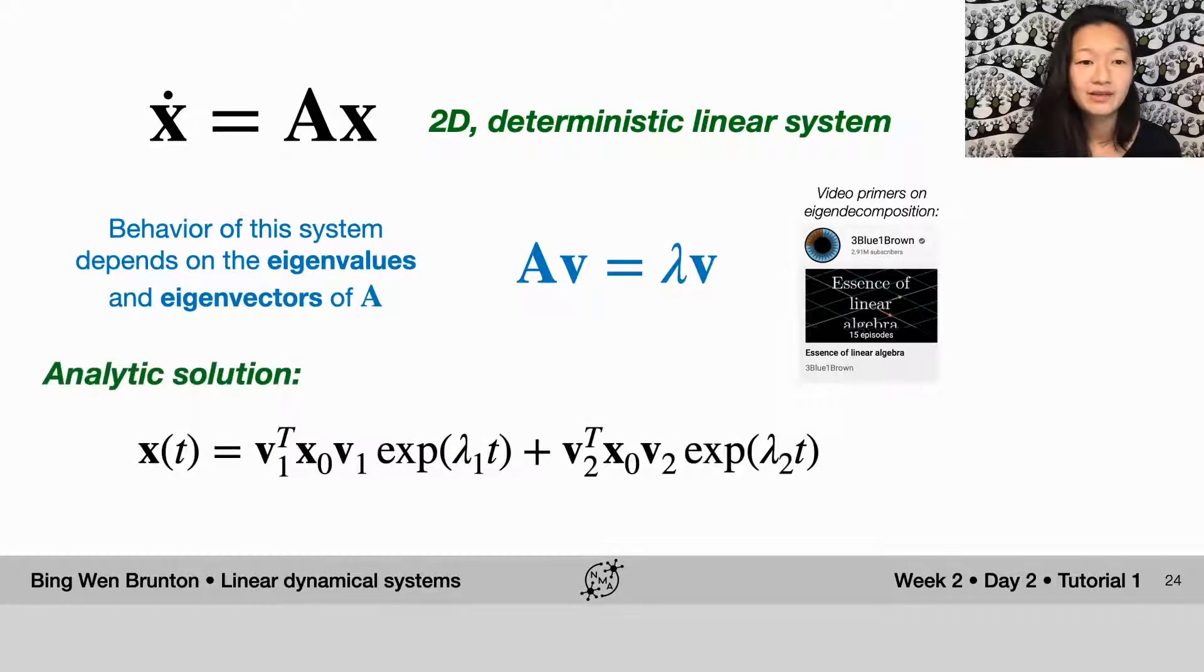And so the thing about these eigenvectors and eigenvalues is that now we can write down the solution for this two-dimensional deterministic linear system as a weighted sum of the eigendecomposition. So I'm going to break this down for you a little bit here. If you just look at this first term, you'll see that it looks very similar to the solution of our 1D system from previously. But now instead of having a number lambda, this lambda happens to be the first eigenvalue of A, and it's paired with the first eigenvector of A. So this is V1 transpose and V here, sandwiched by the initial conditions. And then we have exactly the same form of the equation for the second eigenvalue and second eigenvector of A.